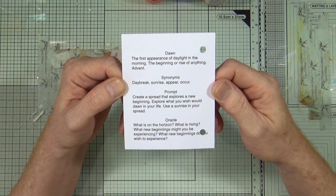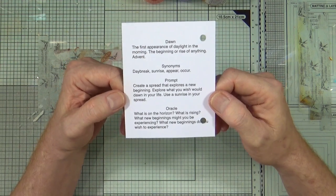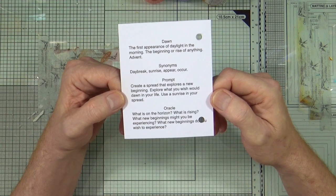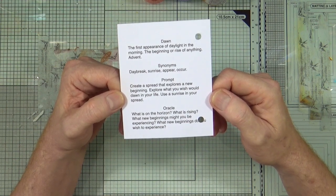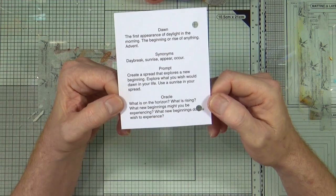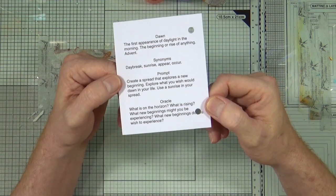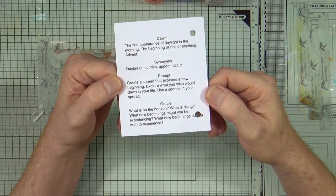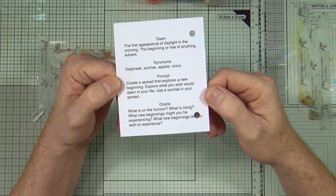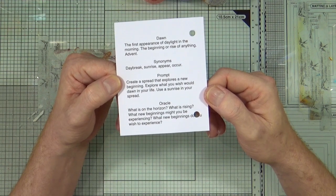The prompt is: create a spread that explores a new beginning. Explore what you wish would dawn in your life or use a sunrise in your spread. And then the oracle: what's on the horizon, what is rising, what new beginnings might you be experiencing, and what new beginnings do you wish to experience?